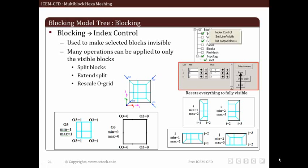Let us have a quick look at blocking option available in model tree. If we right click on blocking option in model tree, we will find various displaying options in blocking. The most important and frequently used option is index control. This is used to make desired blocks visible. The shortcut key for enabling the index control is I on your keyboard.